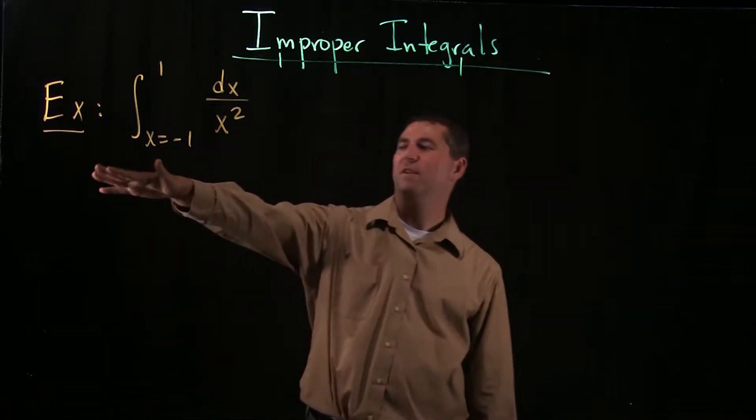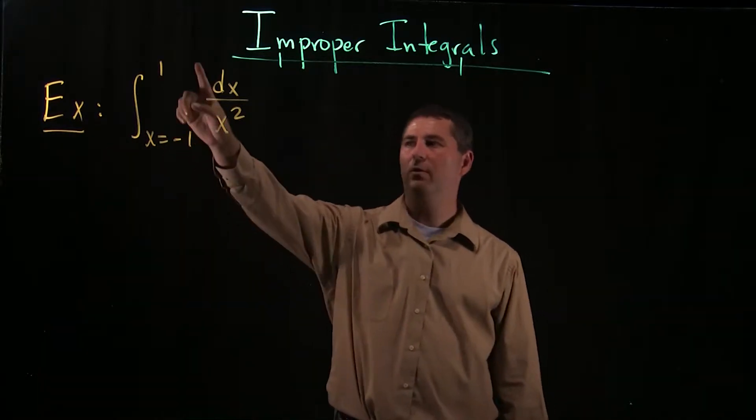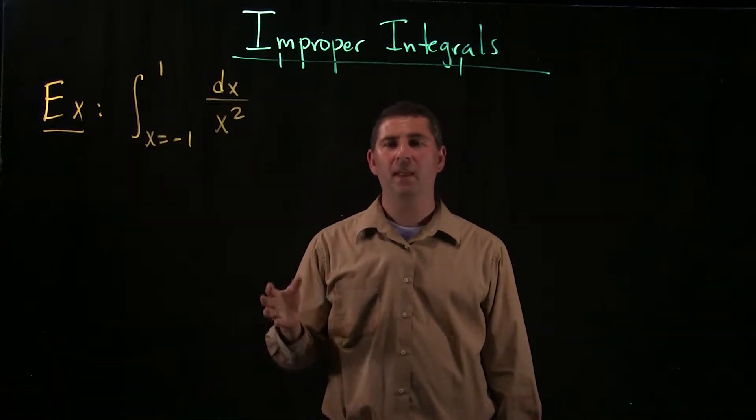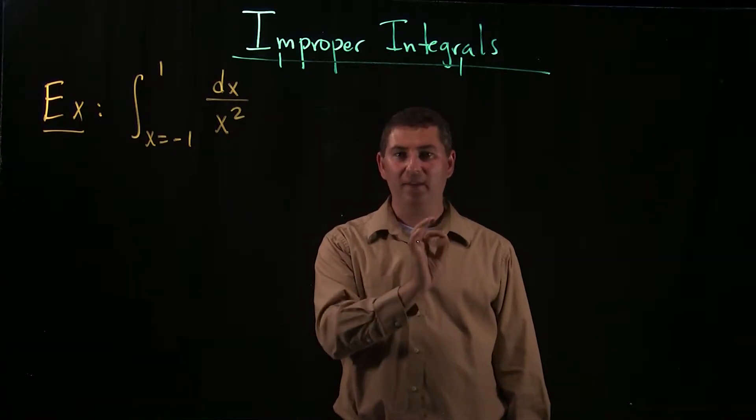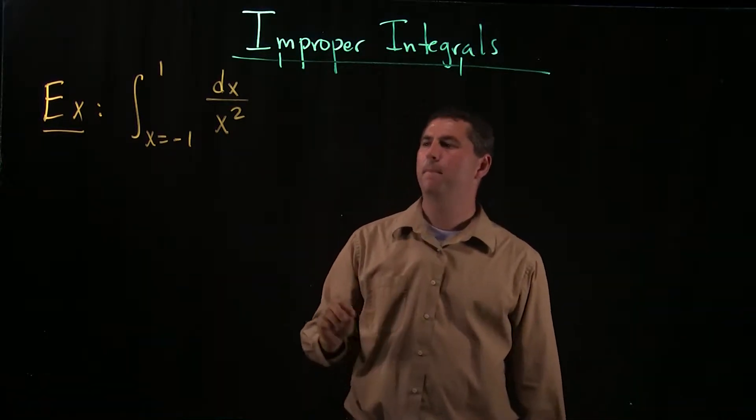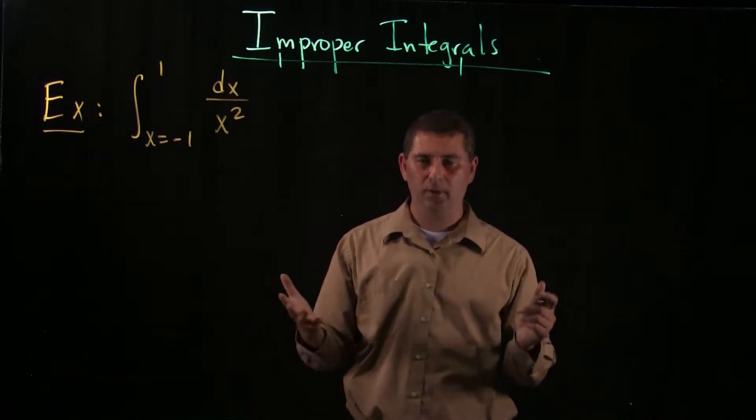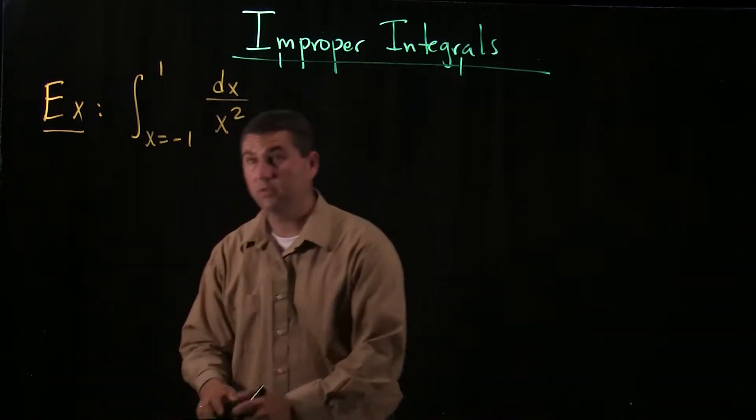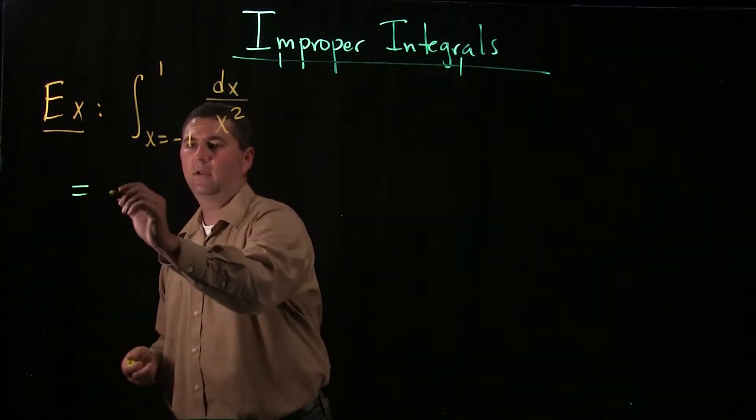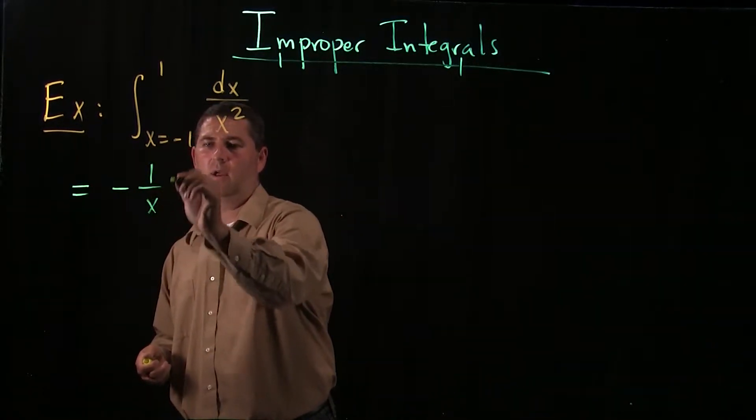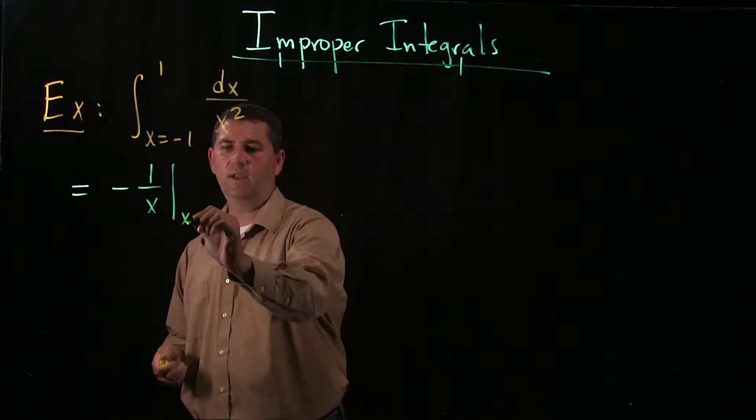We're going to start with this example where I want you to notice we do not have infinity anywhere in here, and yet there is something amiss. Let's see why. If I try to compute this the way I'm accustomed, I'm going to find an antiderivative.